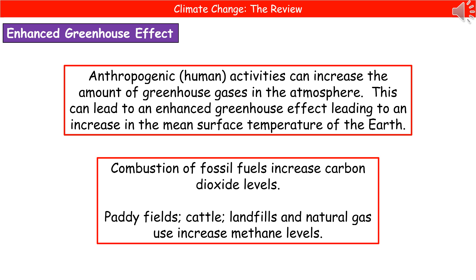The problem comes through what's known as the enhanced greenhouse effect. When we refer to the enhanced greenhouse effect we're talking about anthropogenic, or human, activities which are increasing the amount of greenhouse gases in our atmosphere. As a result of the enhanced concentrations of greenhouse gases in the atmosphere, this is leading to an increase in the mean surface temperature of the Earth.